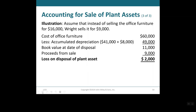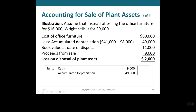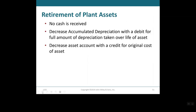Now, assuming that instead of selling the office furniture for $16,000, Right sells it for $9,000. The cost of the furniture is $60,000. We still add up the accumulated depreciation to find the book value at the date of disposal, which brings us to $11,000. The proceeds from the sale are $9,000, which is less than the book value, so that's going to be a loss on disposal. To record it: debit Cash $9,000, debit Accumulated Depreciation $49,000, debit Loss on Disposal of Plant Assets $2,000, and credit Equipment $60,000.